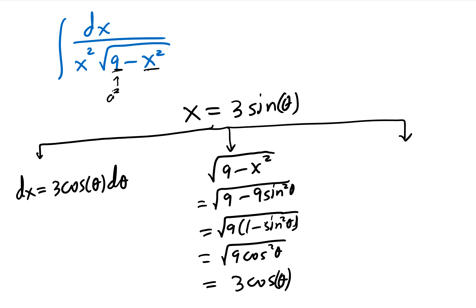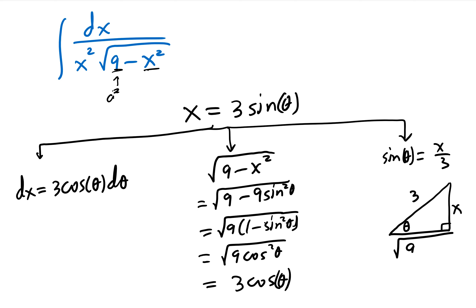Third, solve for the trig function: sin(θ) = x/3. Draw a right triangle with θ, opposite side x, hypotenuse 3, so by the Pythagorean theorem the adjacent side is √(9−x²). From there we can also solve for θ = sin⁻¹(x/3) if needed.